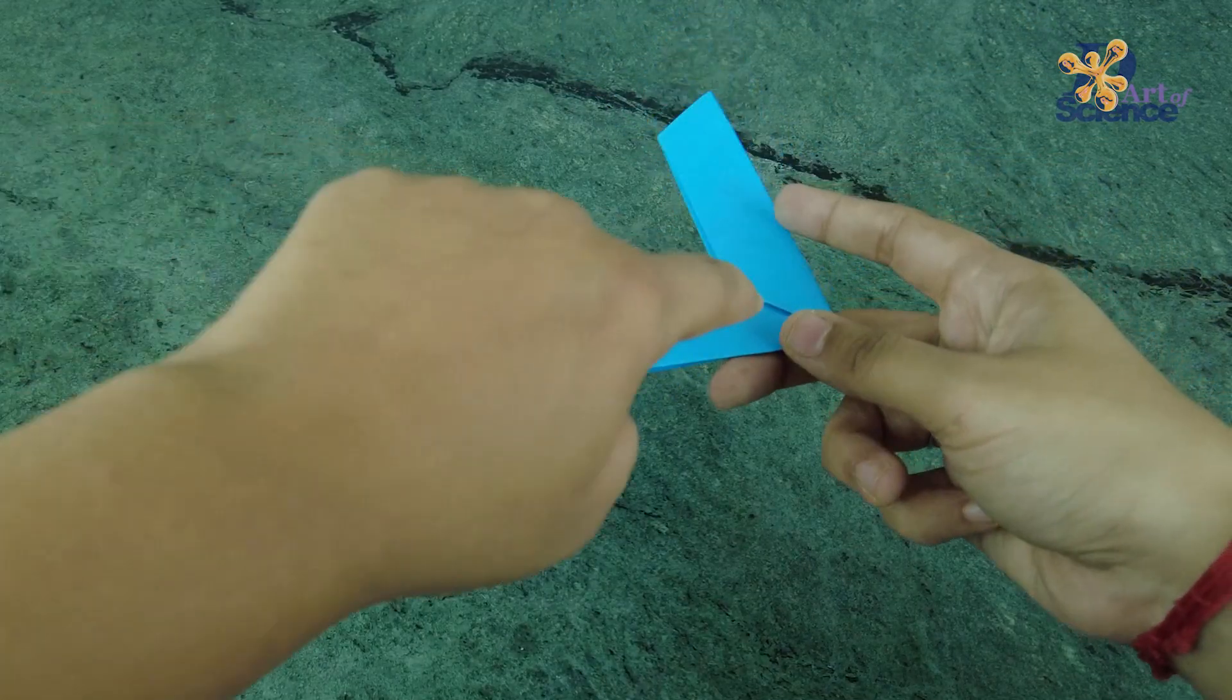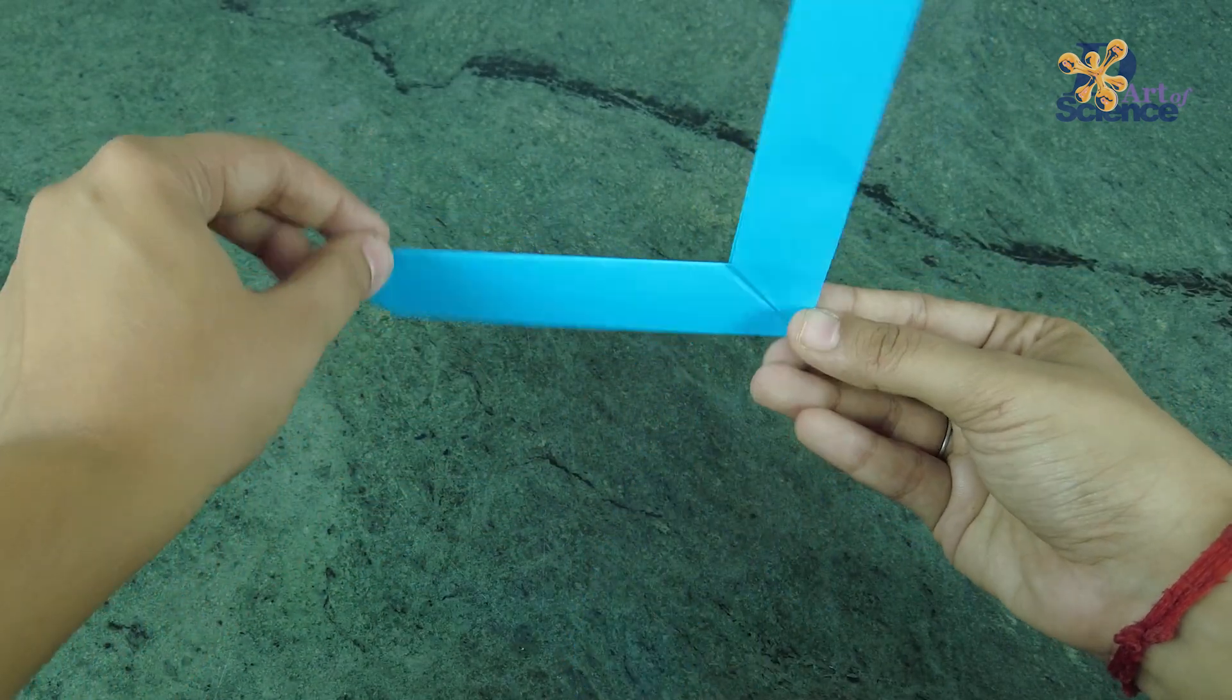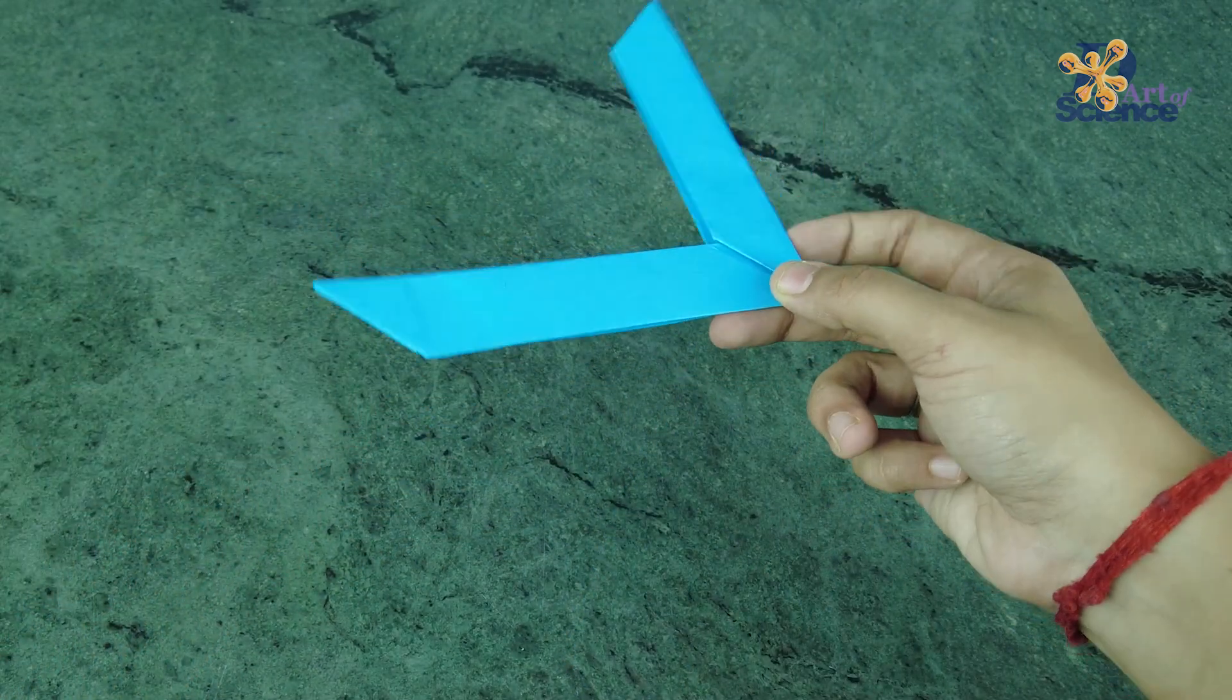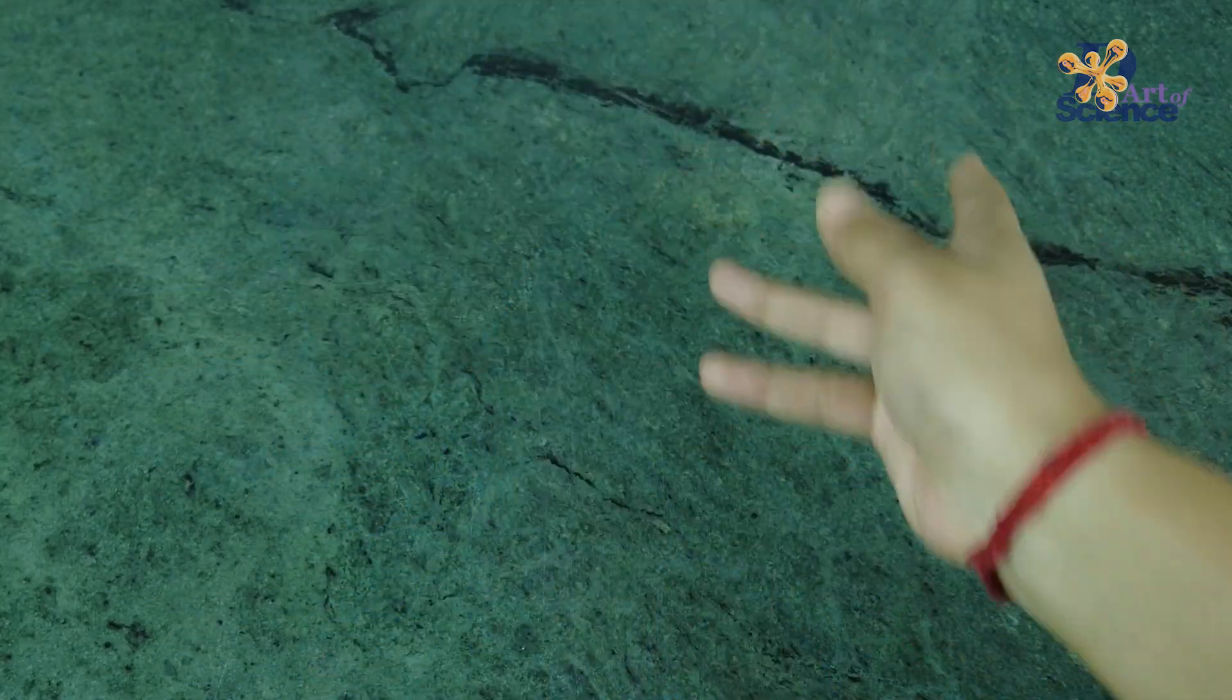The one with the diagonal line is the upper side of the boomerang. Hold it in the middle and at an angle, throw it using your wrist as shown.